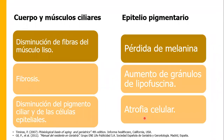En cuanto al cuerpo y los músculos ciliares, es muy importante porque acompañan la función del cristalino, sosteniendo la zónula para que este se abombe o se aplane. Va a haber disminución de fibras del músculo liso, fibrosamiento, lo que contribuye a que ya no se abombe ni se aplane. También va a haber disminución del pigmento ciliar y de las células epiteliales.